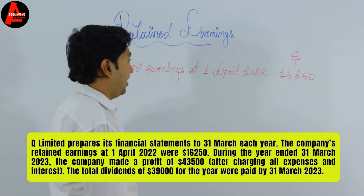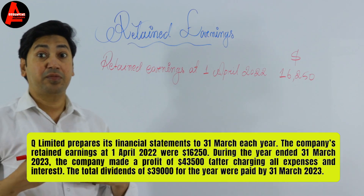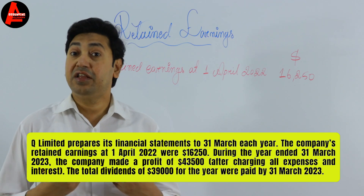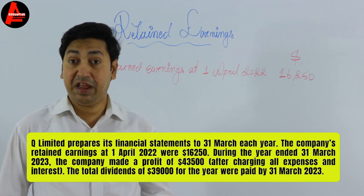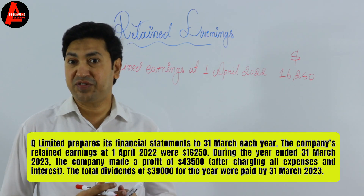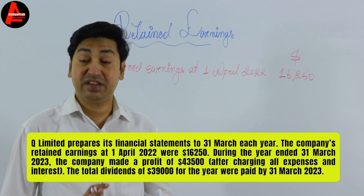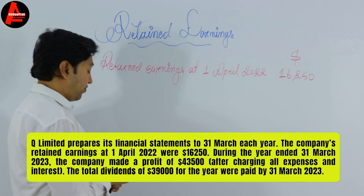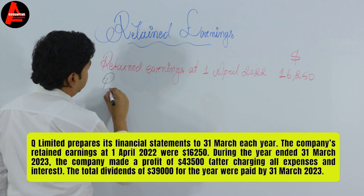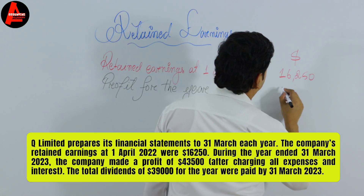On the question, we have profit for the year after charging all expenses and interest. If interest had not been charged, we would need to subtract it as an expense from the profit. But in this question, we don't need to do that — we write the profit for the year directly.